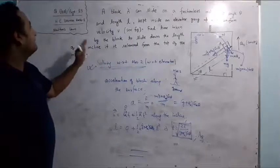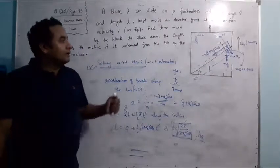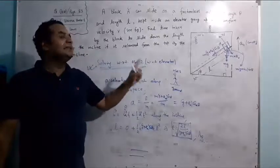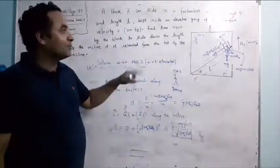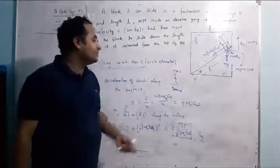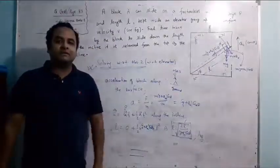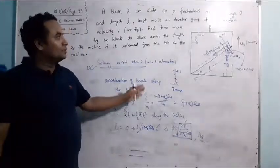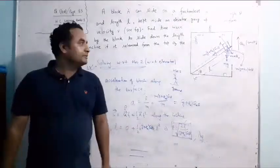So that was Question 40 from S.C. Verma book. We solved the original constant-velocity case, then extended it to upward acceleration A₀ and downward acceleration A₀. I hope all students understood the discussion. Now let's move on to the next question.